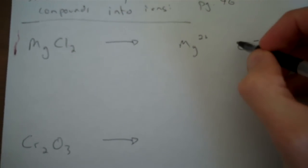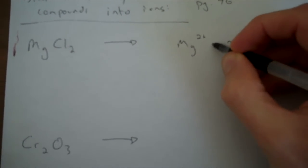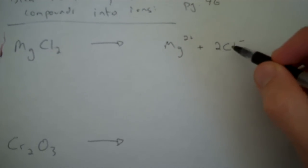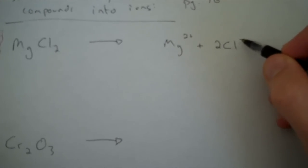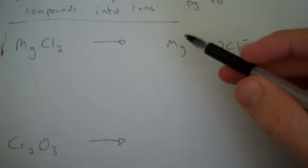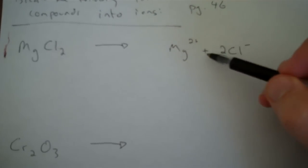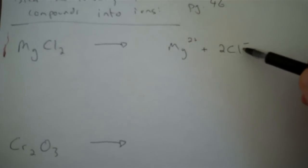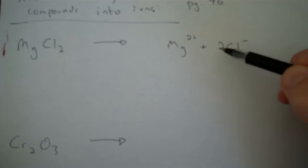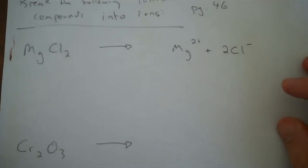So I need to write 2 over here to show that I have 2 chloride ions, each of which has a charge of minus 1. So my ions are Mg2+, and chloride 1-. And I have 2 of the chloride ions, and 1 of the magnesium.